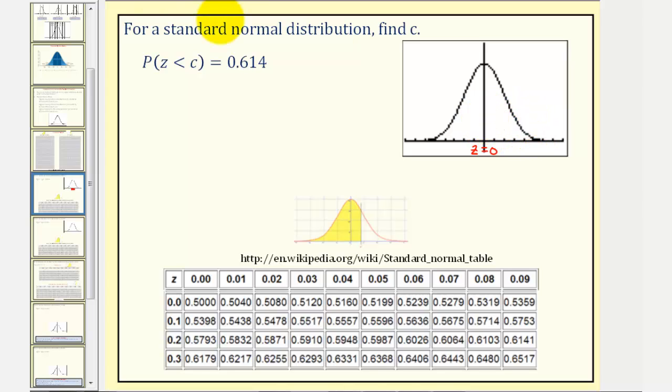So now looking at our table below, we're looking for a probability, or an area under the standard normal distribution of 0.614. The closest value is here at 0.6141.